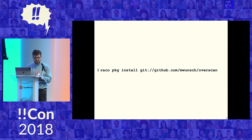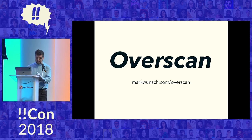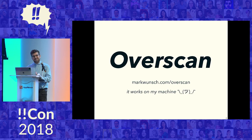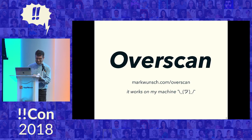Once you install Racket, you'll run the command raco package install. This is also the GitHub URL where you can find the code for Overscan. You can learn more about Overscan and read the docs at markwensch.com/overscan. It would be generous to call this alpha software, but I'm really excited to collaborate with hopefully some of you to get it to work on other machines besides my own.